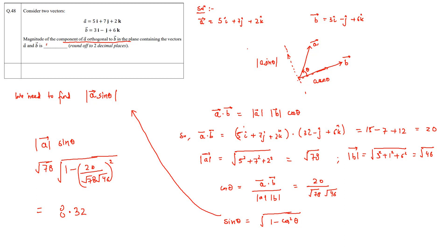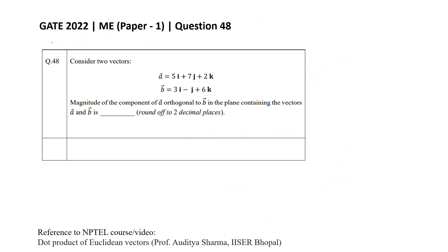So the answer to this problem is 8.32. To learn more about the dot product, you can refer to the NPTEL course video on dot product of Euclidean vectors by Professor Aditya Sharma of IISER Bhopal.